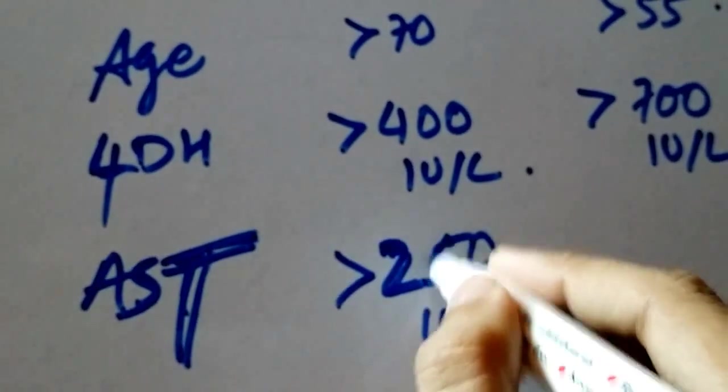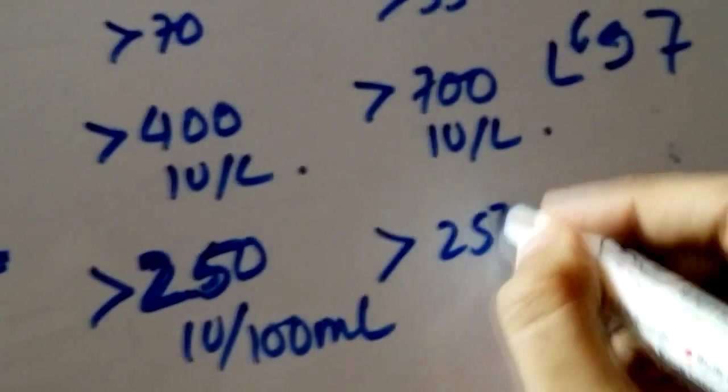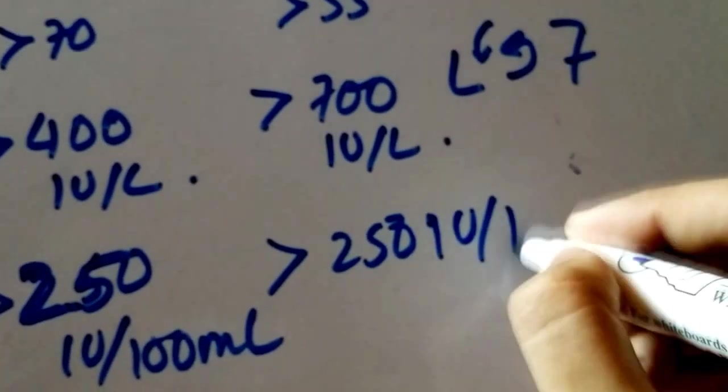And S looks like a 5. So AST 250. That's how I remember. It's the same for non-gallstone pancreatitis, thank God.